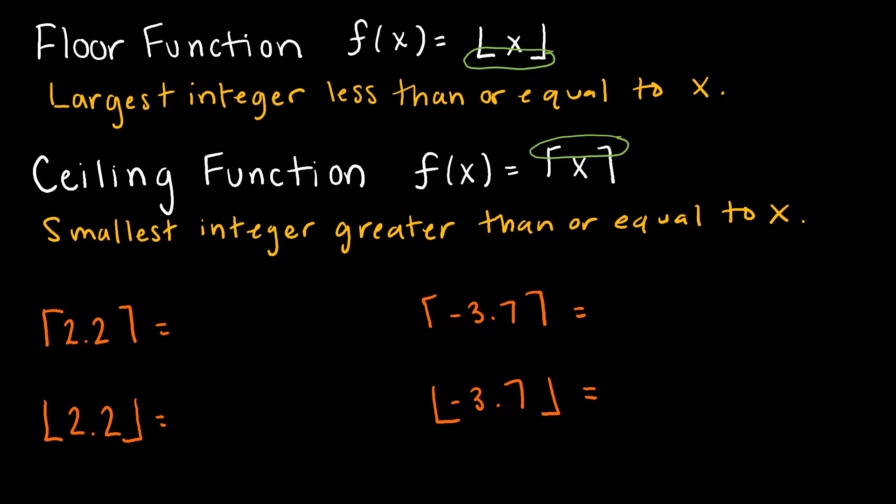So let's take a look at an example. I've got 2.2, and if I'm thinking about 2.2 on a number line, then I'm thinking about 2 and then 3, and 2.2 is right around somewhere in there. And if I'm rounding, or if I'm using the ceiling function, the ceiling function says round up to the next integer, and the floor function says round down to the next integer.